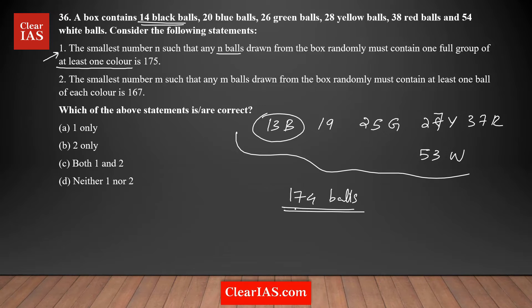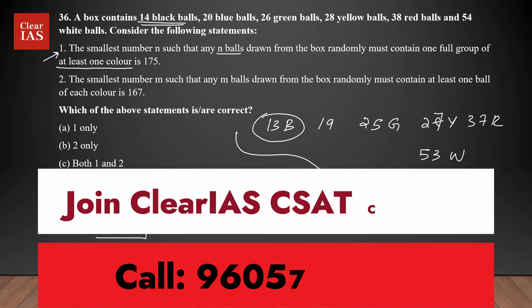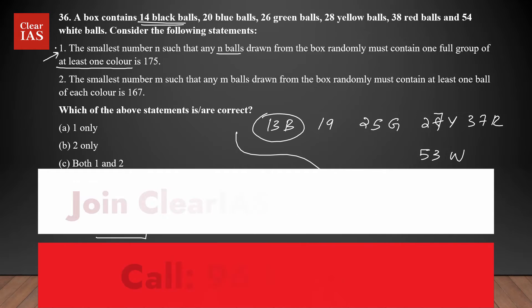After selecting 174 balls, the condition is still not satisfied — we don't have any full group; for any color, one ball is missing. But the next ball you select, irrespective of which color it is, will definitely give you one full group of at least one color. So the minimum number of balls you should select to satisfy this condition is 175. Statement one is correct.